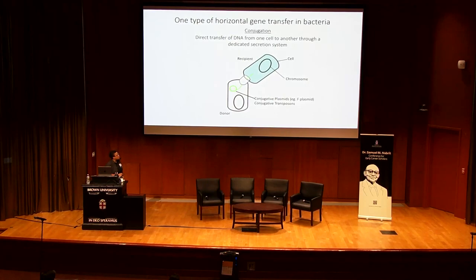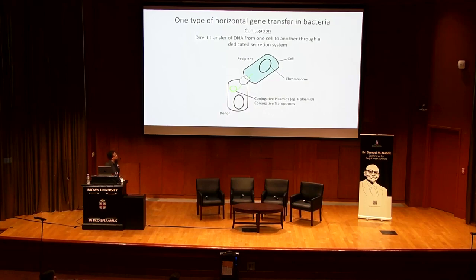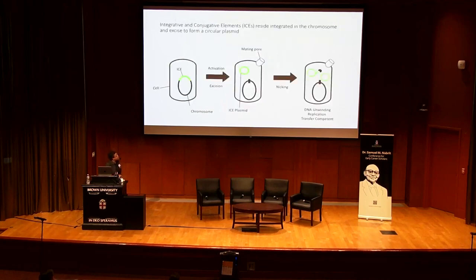There are two main classes of conjugative elements. There are the more widely known and well-studied conjugative plasmids — think F-plasmid and E. coli. And there are the lesser known, but actually far more prevalent, found in virtually every prokaryotic clade, known as conjugative transposons. These are also known as integrative and conjugative elements, or ICEs for short. A clear delineation between plasmids and ICEs is that ICEs reside integrated into the chromosome of their host, and thus are passively propagated as the cell replicates and segregates its chromosome.